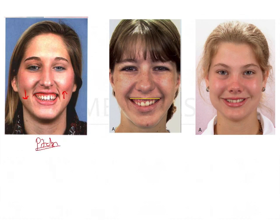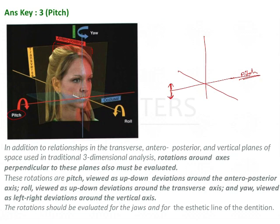The second plane is the transverse plane, marked in yellow. The perpendicular axis passing through the transverse plane is used for roll discrepancies. Roll is also an up-and-down movement, but along the transverse plane.